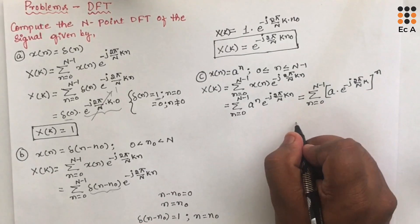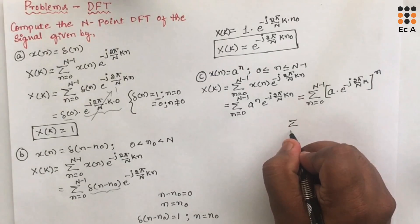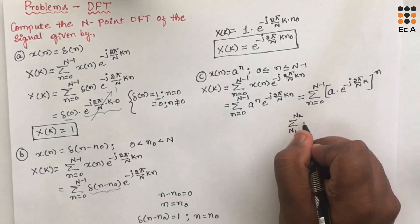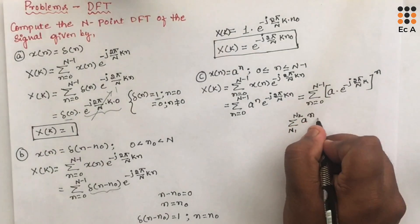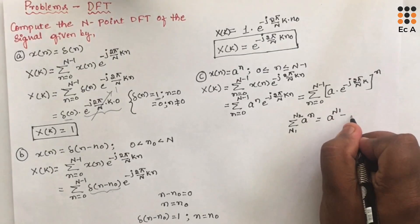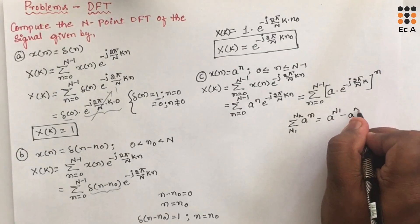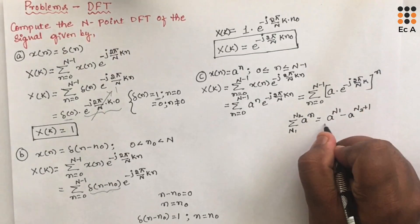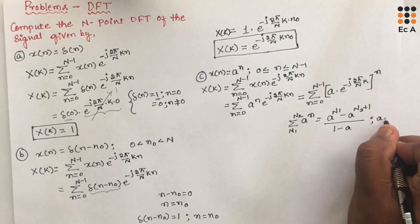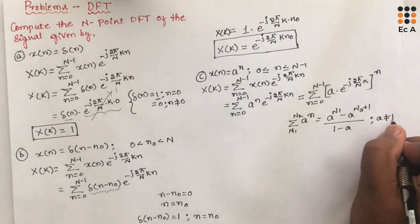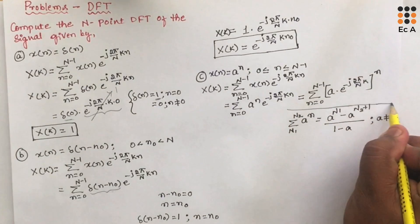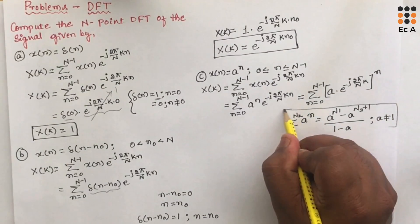We have a formula which says summation from n₁ to n₂ of aⁿ can be written as (a^n₁ - a^(n₂+1)) / (1 - a) for a ≠ 1. Remember this formula — it is very helpful for solving many problems.